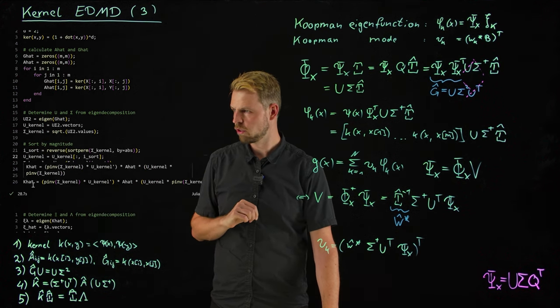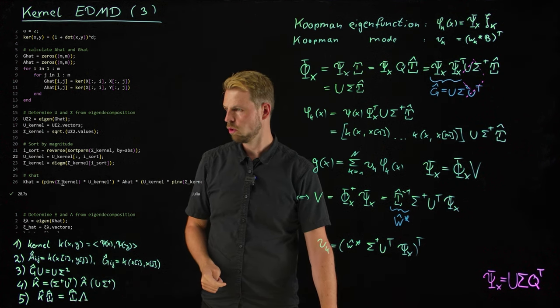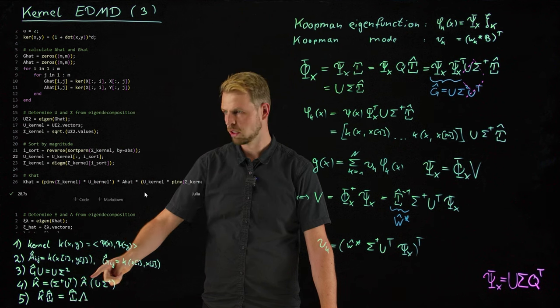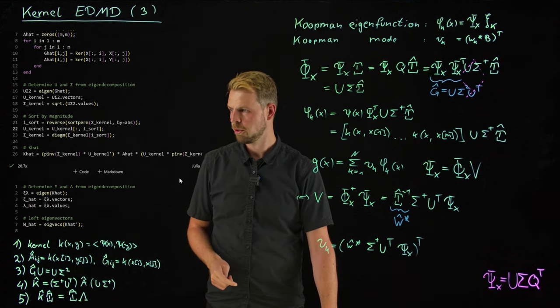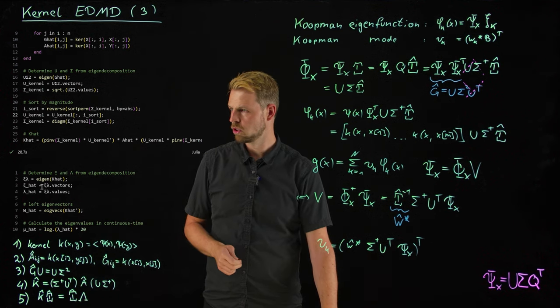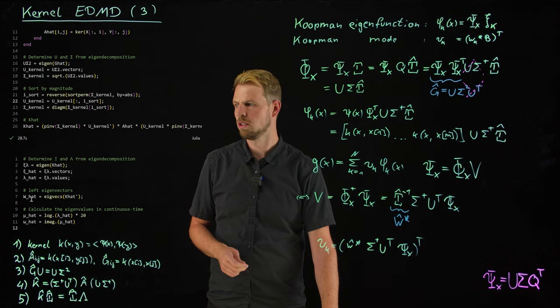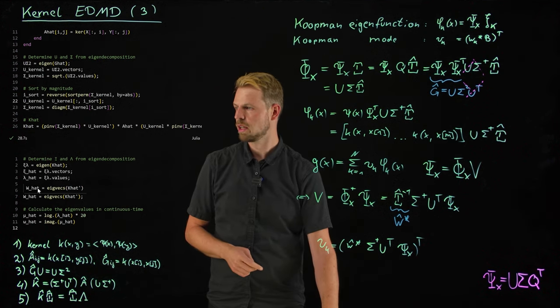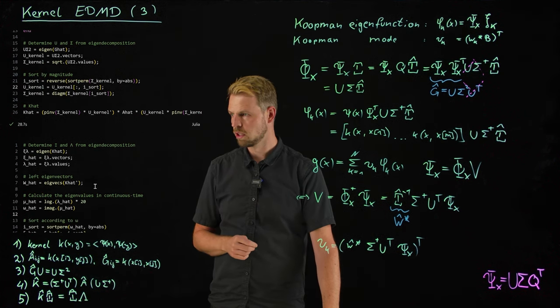Then I can do some sorting so that the dominant ones or the lowest frequency ones are leading. And then I compute the K-hat matrix. Again exactly as it's defined here. So the pseudo inverse of sigma times U-transpose times A-hat, the way it goes here. And then all the way to the end. And then I'm doing step five, the eigenvalue decomposition of my K-hat matrix. Again very straightforward. Only thing I'm adding here already is the left eigenvalue W by taking the eigenvectors of the transposed matrix.